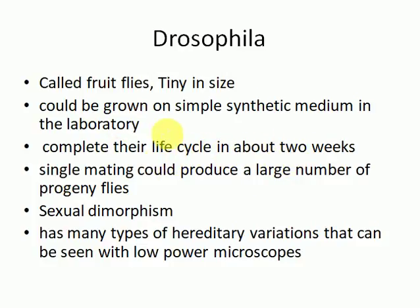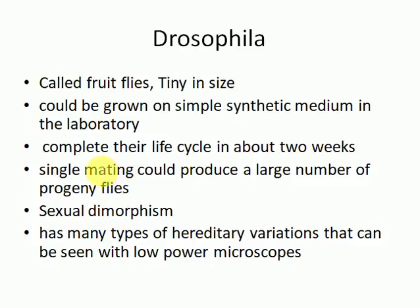The life cycle is two weeks, which is a very big advantage. A single mating can produce a very large number of progeny flies. The more the number of flies, the more precise and accurate the readings taken by the scientist. Getting a large number of progeny is very important, and it is possible in the case of Drosophila.